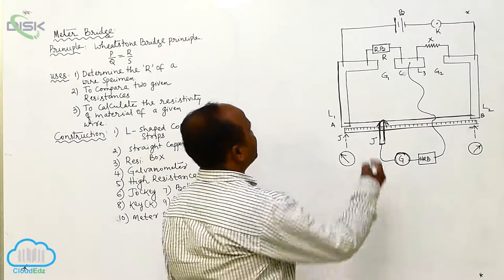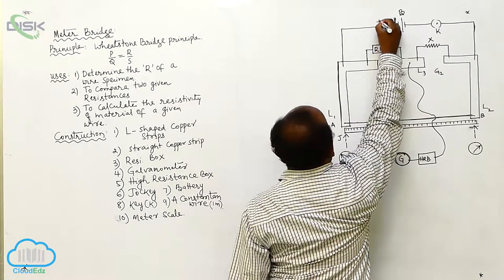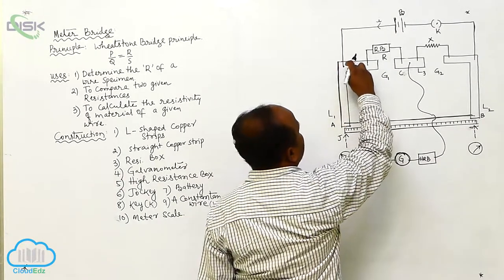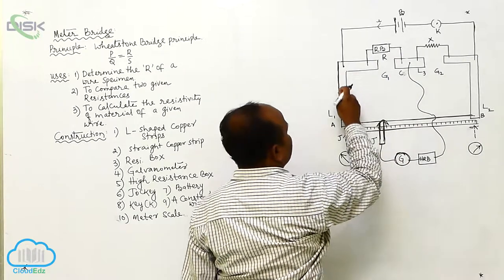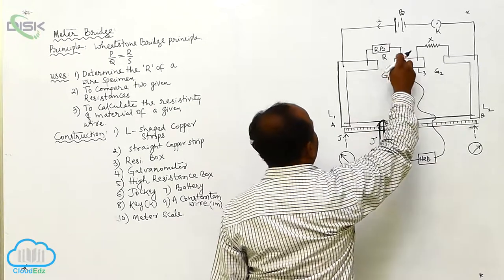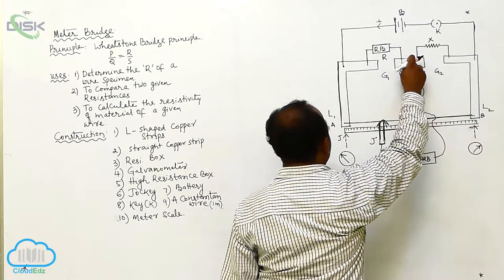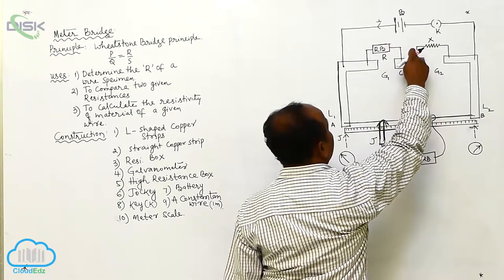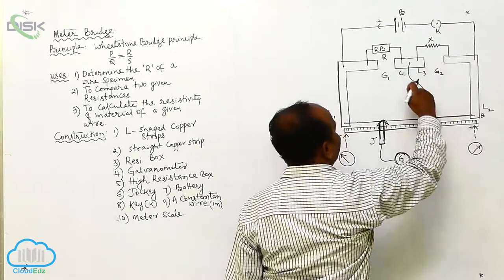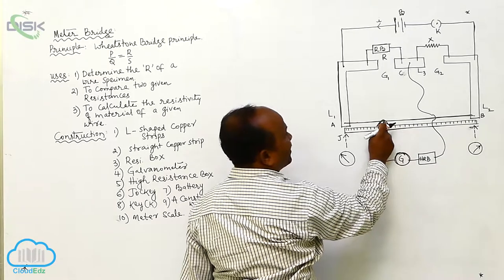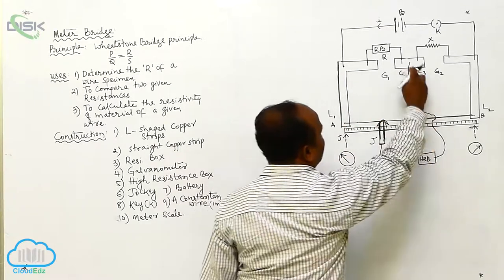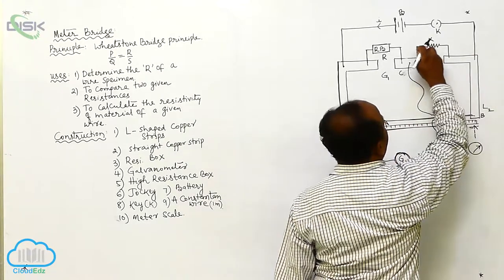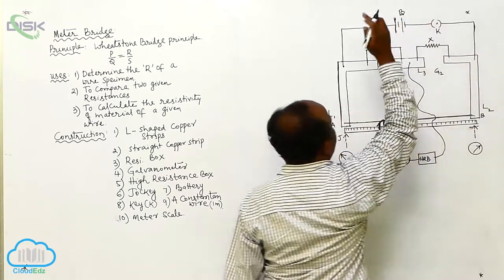Now let's see how the current is distributed. A current I enters the circuit and reaches a junction. Some of the current passes one way, and some passes another way. Whatever current reaches point C, it is distributed again — some passes through the wire and some passes through the galvanometer. Both currents recombine and pass together, eventually reaching the negative terminal of the battery.